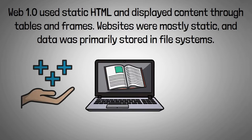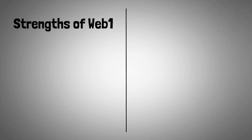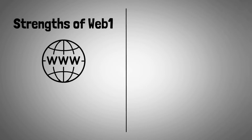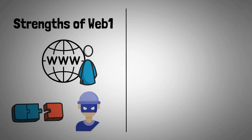While Web 1.0 had many advantages, it also had drawbacks that contributed to the evolution of Web 2.0. Its strengths include marking the beginning of the World Wide Web (WWW), upon which the modern web was built. Because Web 1.0 only allowed one person to add content, it did not permit malicious content to be uploaded without the creator's permission.